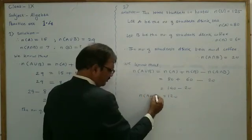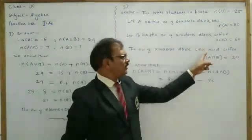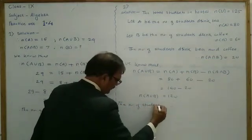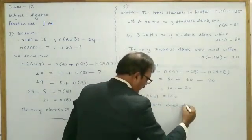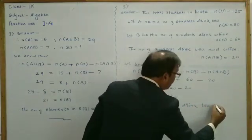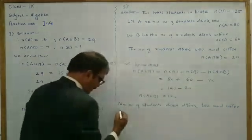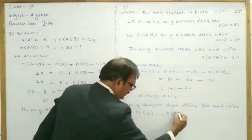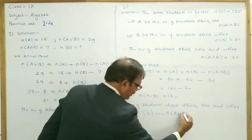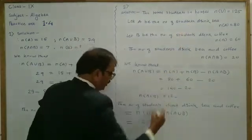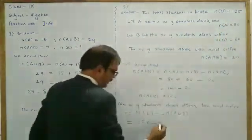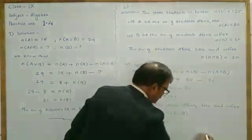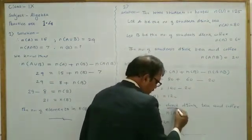Now we want the number of students who do not drink tea and coffee. We have to find the total students n(U) and subtract from it the value of n(A∪B). n(U) is equal to 125, and n(A∪B) is 120. Subtracting: 125 minus 120 gives us the number of students who do not drink tea and coffee.